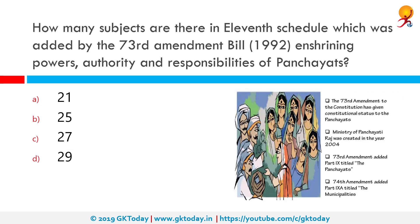How many subjects are there in the 11th Schedule, added by the 73rd Amendment Bill of 1992 enshrining powers, authority, and responsibilities of panchayats? The correct answer is 29. The amendment implements Article 40 of the Directive Principles, which says the state shall take steps to organize village panchayats, upgrading them from non-justiciable to justiciable parts of the Constitution, placing constitutional obligations on states to enact panchayati raj acts as per Part 9.